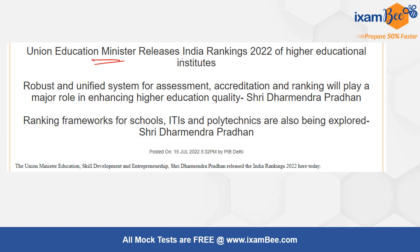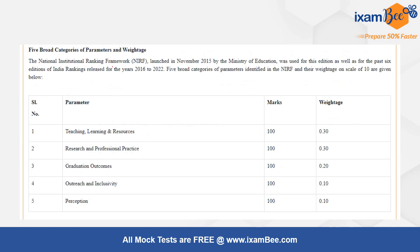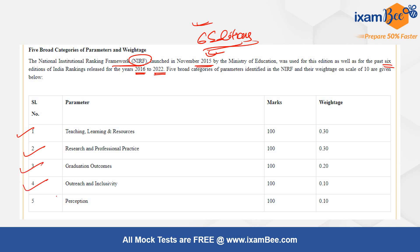Now let us see the news in detail. India Rankings and NIRF come under the Ministry of Education. It is the National Institutional Ranking Framework, launched in November 2015. From 2016 to 2022 there have been six editions — this is the sixth edition. The five parameters are: Teaching Learning and Resources, Research and Professional Practice, Graduation Outcomes, Outreach and Inclusivity, and Perception. Teaching Learning & Resources and Research & Professional Practice each get 30% weightage.